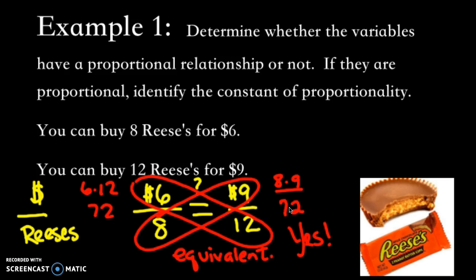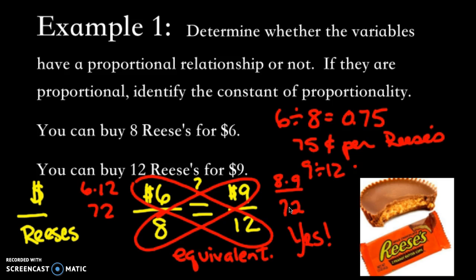To find a unit rate I need to divide. I can do 6 divided by 8 to get 0.75. That would be 75 cents per Reese's. And if you just want to do another double check, you could do 9 divided by 12. That also equals 0.75, so we get the same. So our constant of proportionality is 0.75, and it means 75 cents per Reese's.